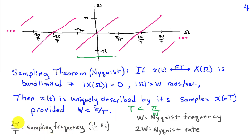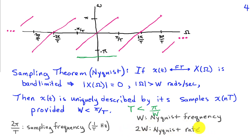Here are a couple of definitions. The quantity 2π/T is known as the sampling frequency in radians per second, or equivalently 1/T in hertz. W, the bandwidth of the signal, is sometimes called the Nyquist frequency, while 2W is called the Nyquist rate — that's the minimum sampling rate. We need to sample at least twice the highest frequency present in the signal to be able to reconstruct the continuous time signal from its samples.